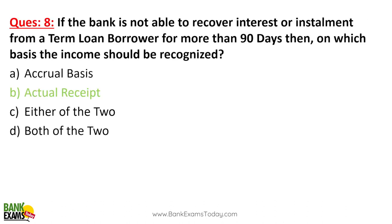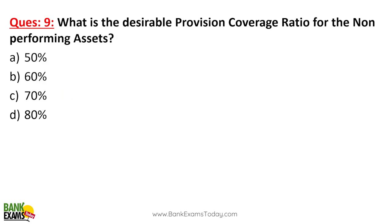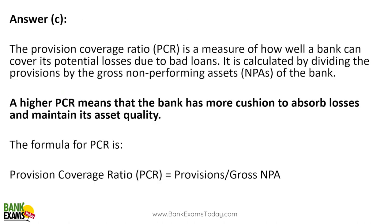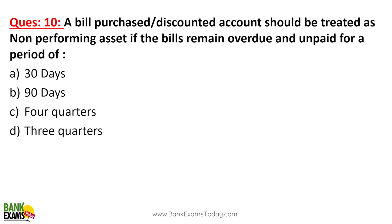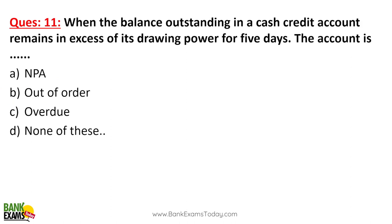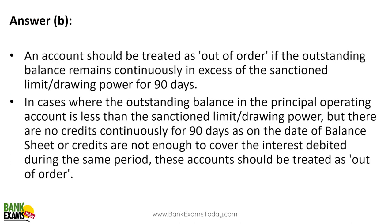This is a very important question. What is the desirable Provision Coverage Ratio (PCR) for NPAs? It is 70%. The PCR is provisions divided by gross NPA — the desired level is 70%. A bill purchased or discounted account should be treated as NPA if the bill remains overdue and unpaid for a period of 90 days. When the balance outstanding in a cash credit (CC) account remains in excess of its drawing power, the account is out of order.